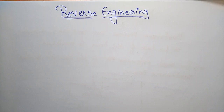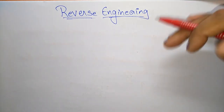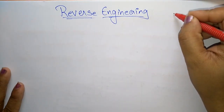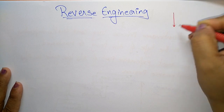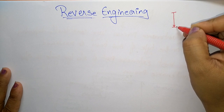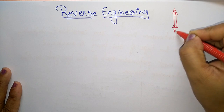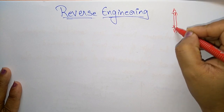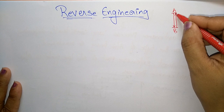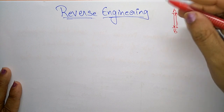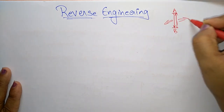Welcome students. The next topic is reverse engineering. Before understanding reverse engineering, you need to know about forward engineering. Suppose you are going somewhere — if you reach a destination and want to return, that journey back is the reverse. From A to B is the forward direction, and returning from B to A is the reverse direction.